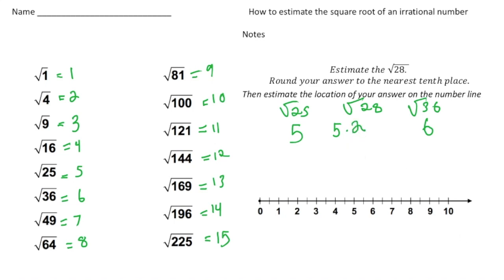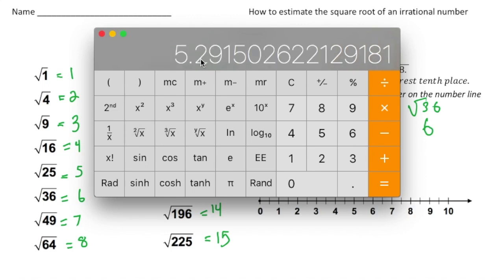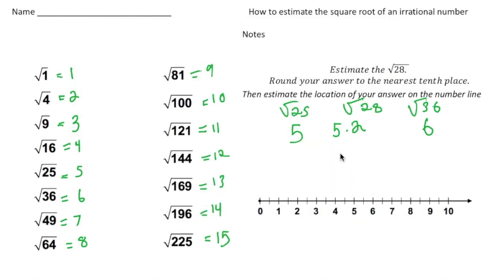Let's check it with a calculator. If I type in 28 and hit the square root button, we get 5.29, so about 5.3 — we're pretty close. On the number line, I'd place the square root of 28 a little bit to the left of 5.5, so right about there would be a good estimation.